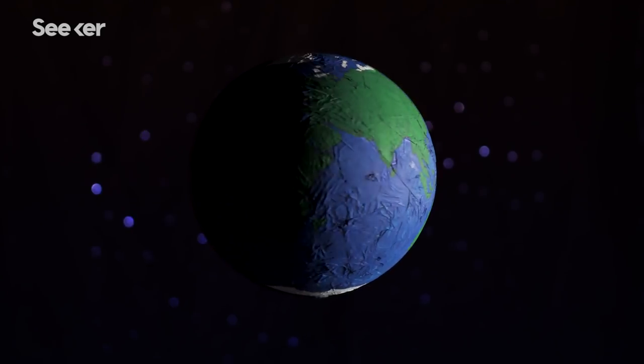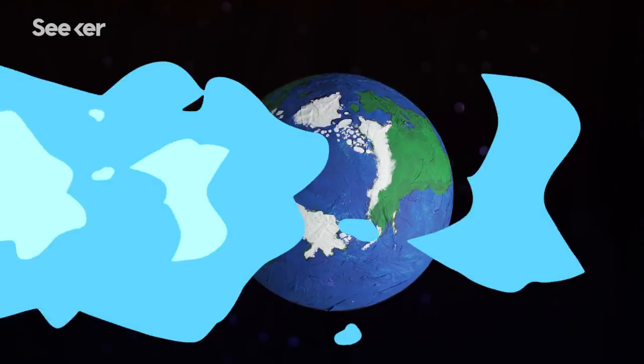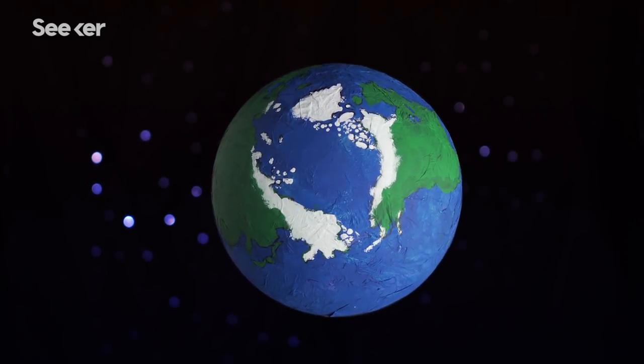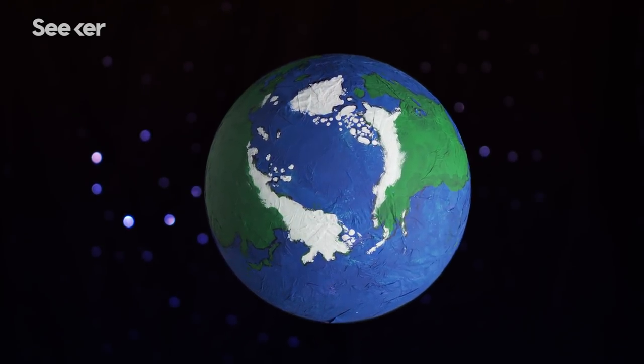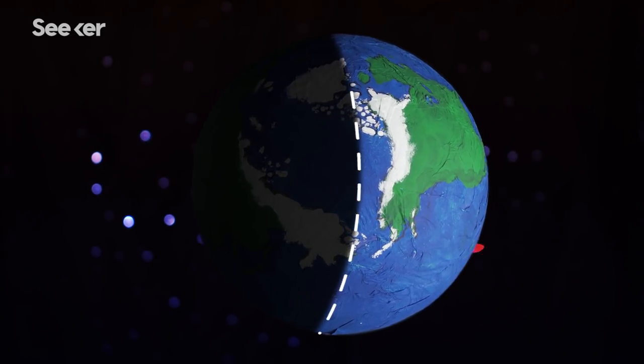On Earth, we see the sun rise from the east and set in the west. But if you were looking straight down from space, you would see half the planet lit and the other half in total darkness. That's the Terminator.